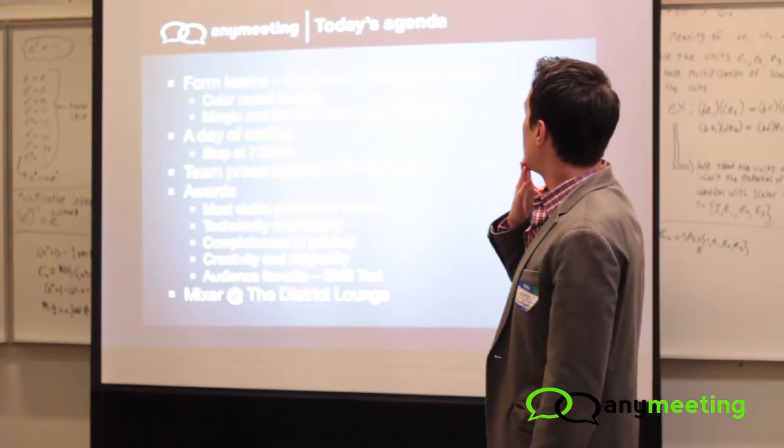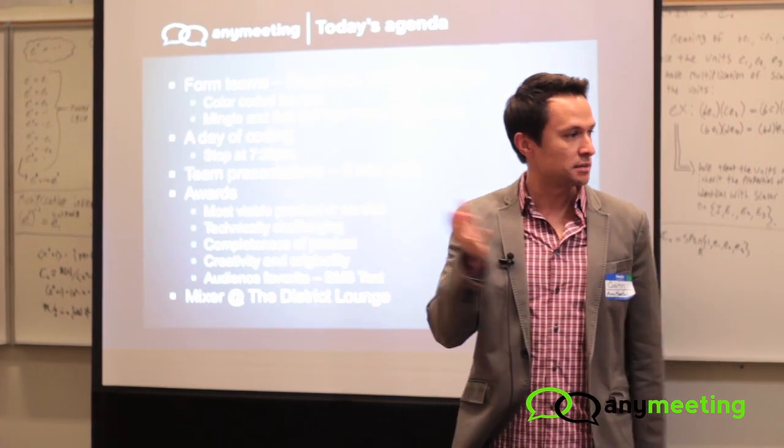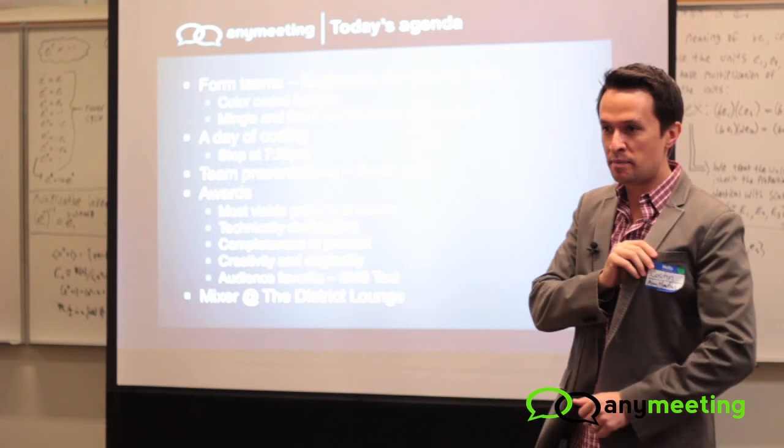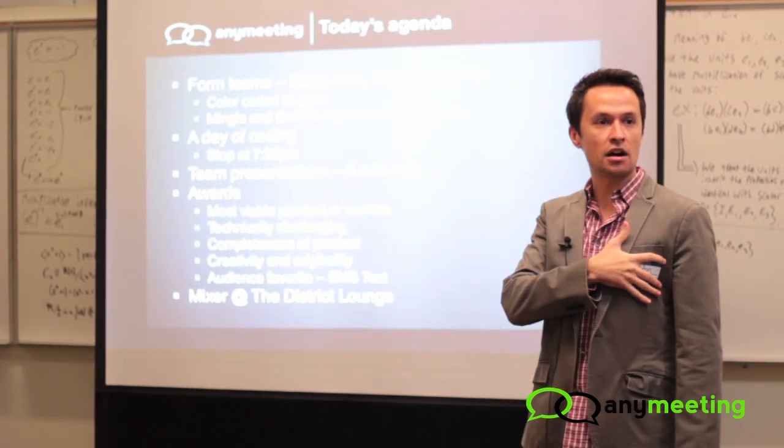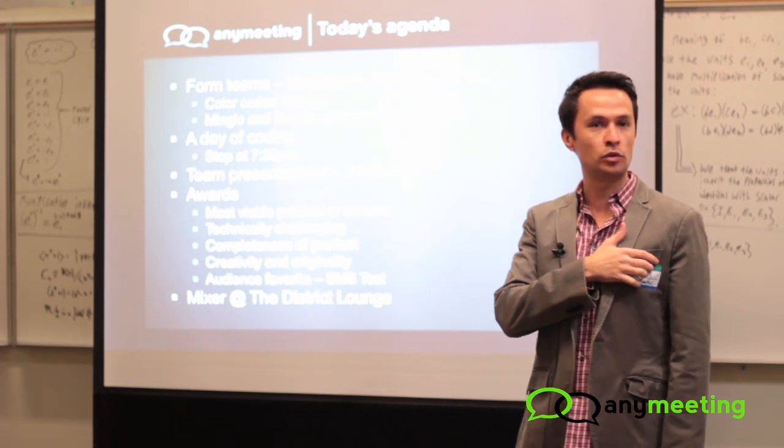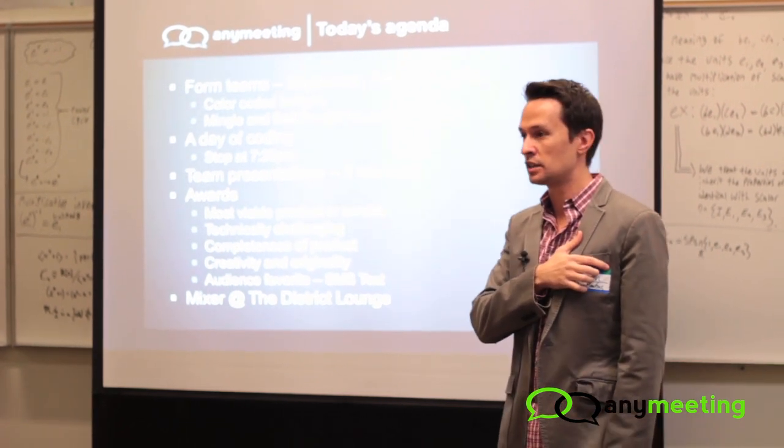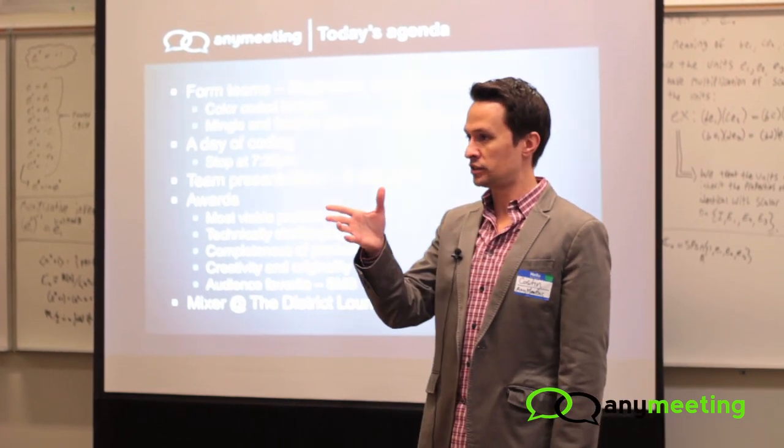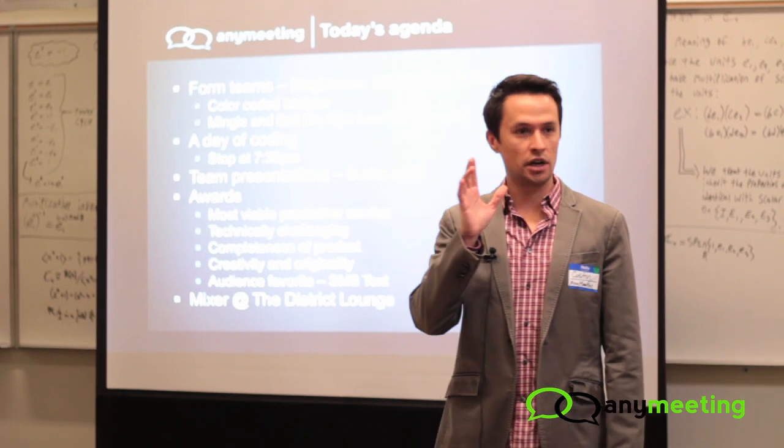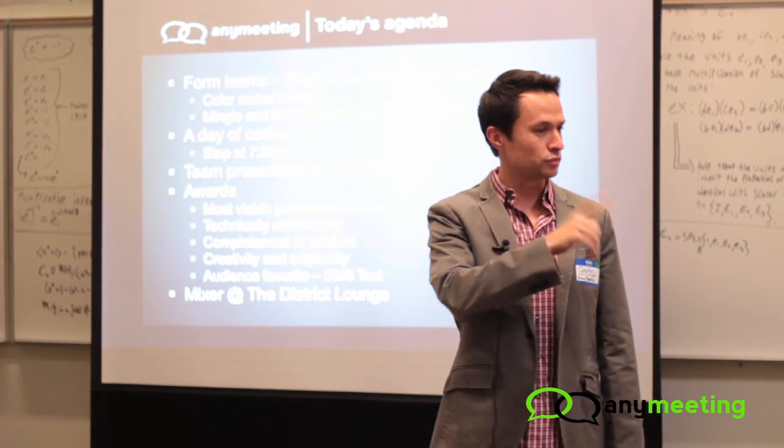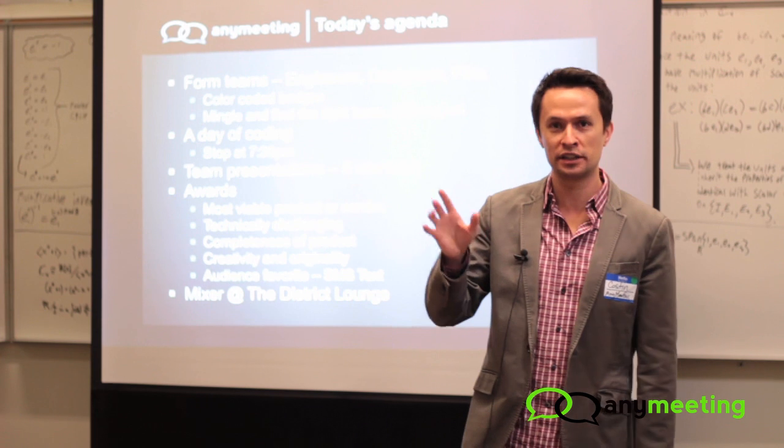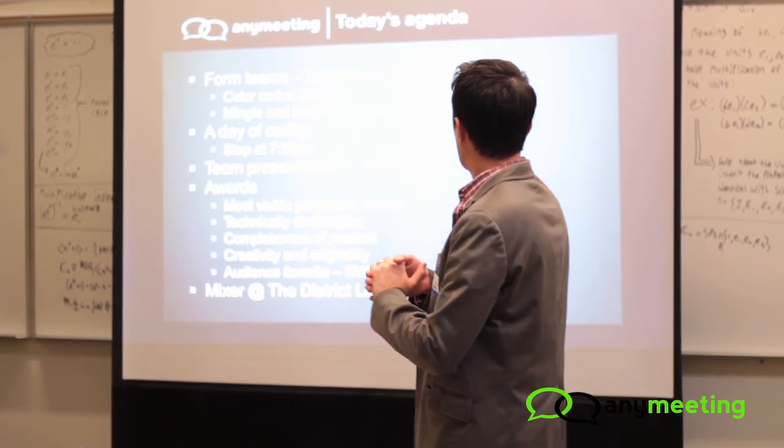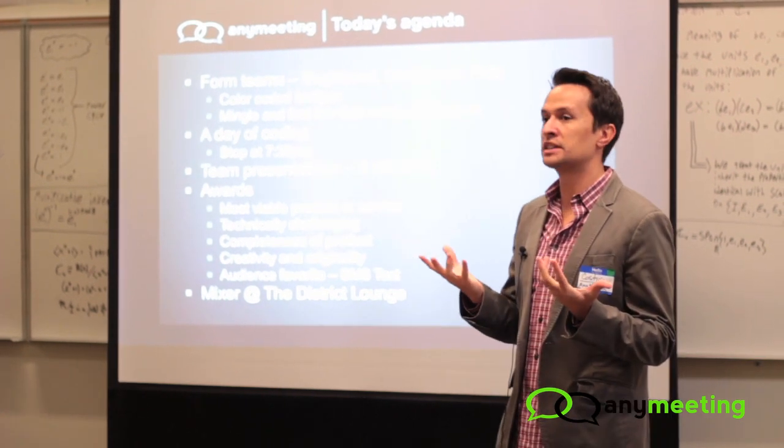So here's what we're going to do today. Looks like some of you guys already have teams. If you don't have teams, feel free to mingle for the next 10, 15 minutes. The badges are color-coded. Green are the sponsors and the people who've helped put this together. So if you need any help, talk to us. I believe red are engineers. Yellow are designers. And red are business guys, product guys. No, red's engineers. Blue are the product marketing business guys. So find yourselves.